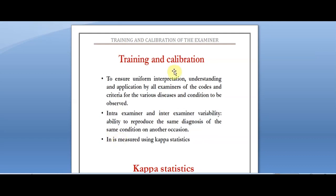Training and calibration is nothing but ensuring uniform interpretation, understanding, and application by all examiners of the codes and criteria for various diseases and conditions to be observed. If you are using OHIS and DMFT, the examiners should be very thorough with those indices — they should know the criteria, methodologies, and instruments inside and out, with no confusion between examiners.